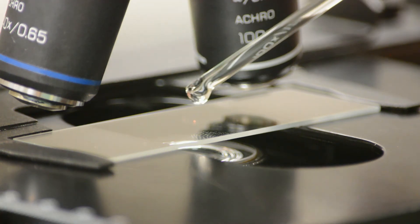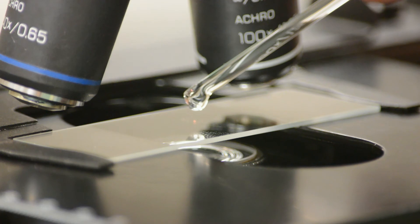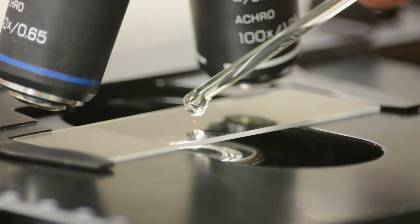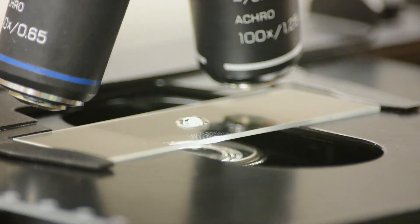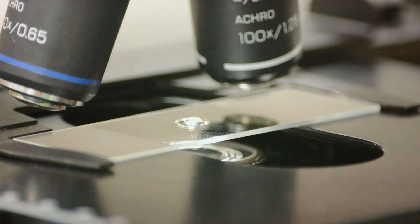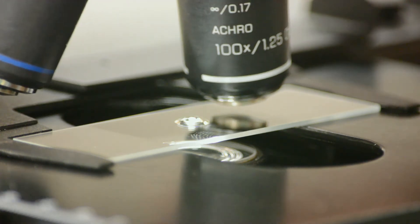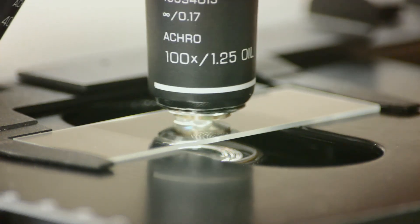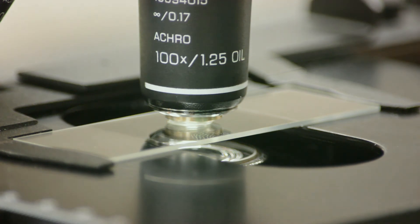We then take our immersion oil. We place a drop of the immersion oil in the center of the slide. You can see the little glass dropper coming in. You place a drop of the material in the center of the slide. You then rotate the oil immersion objective into the oil. You will see that the oil will actually touch the objective.